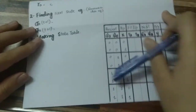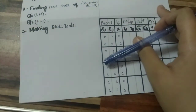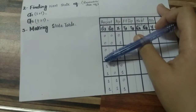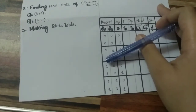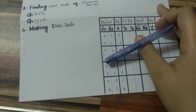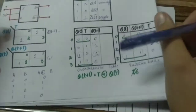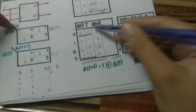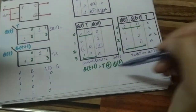Our second step is finding the next state equation. To find the next state equation, we need the characteristic equation and the characteristic table. We can also find the state table from this. This is a T flip-flop, and here is its characteristic table and characteristic equation.